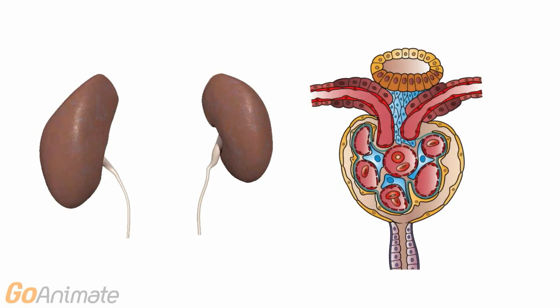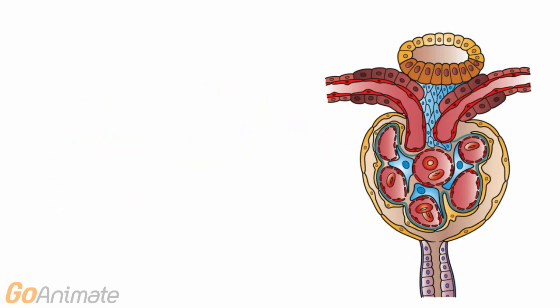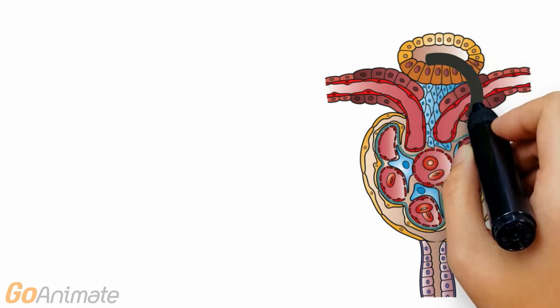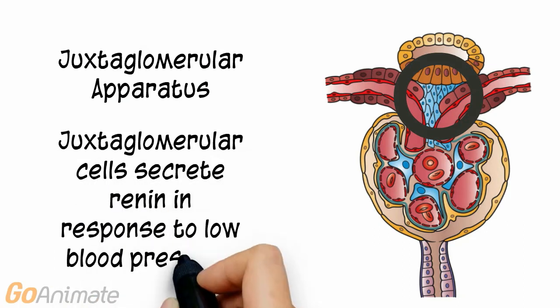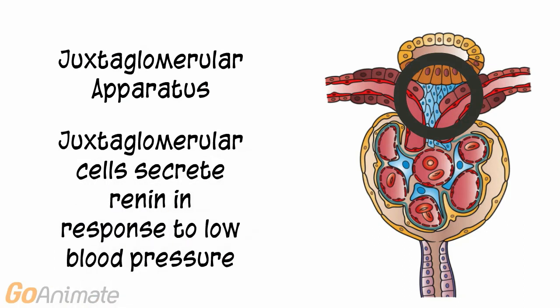The kidneys contain very small structures called nephrons that make urine. A part of the nephron, called the juxtaglomerular apparatus, contains cells that secrete the enzyme renin. Renin is secreted in response to low blood pressure as sensed by the juxtaglomerular apparatus.